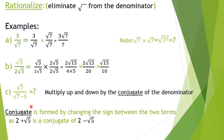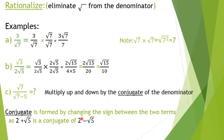You must multiply up and down by the conjugate of the denominator. The conjugate is formed by changing the sign between the two terms. For example, the conjugate of 2 plus radical 5 is 2 minus radical 5, and vice versa. If the expression has a minus, the conjugate will have a plus.